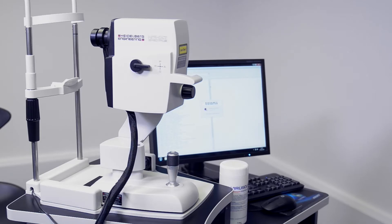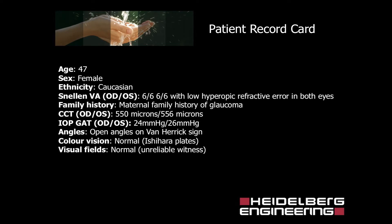The following video demonstrates how OCT might be used to evaluate the glaucoma suspect. A 47-year-old female patient attends your practice. She is of Caucasian origin. Snellen visual acuity is 6/6 in both eyes with a low hyperopic refractive error. There is a family history of maternal glaucoma.